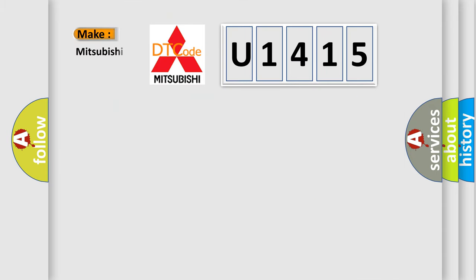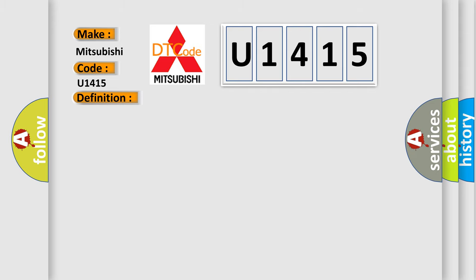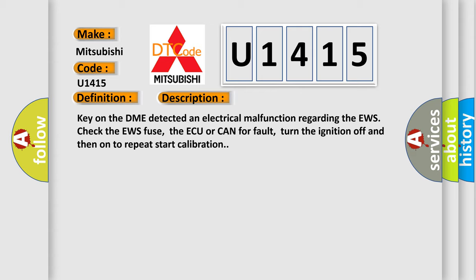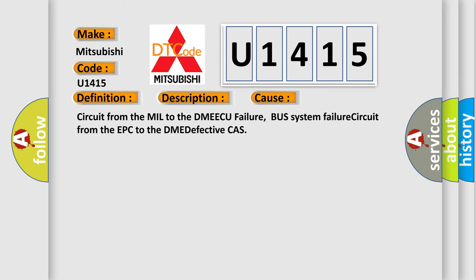So, what does the diagnostic trouble code U1415 interpret specifically for Mitsubishi? The basic definition is EWS electronic immobilizer tampering, or start value not yet programmed. Key on, the DME detected an electrical malfunction regarding the EWS. Check the EWS fuse, the AQ or CAN for fault. Turn the ignition off and then on to repeat start calibration. This diagnostic error occurs most often in these cases: circuit from the mill to the DME ECU failure, bus system failure, circuit from the EPC to the DME, or defective CAS.